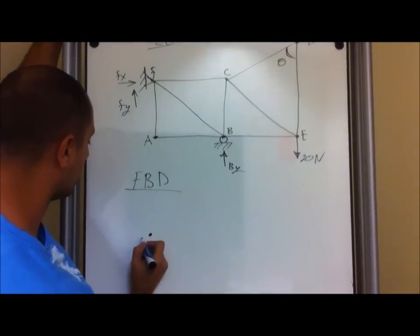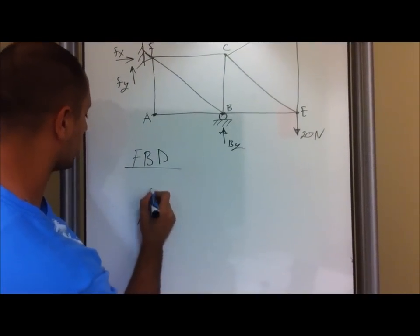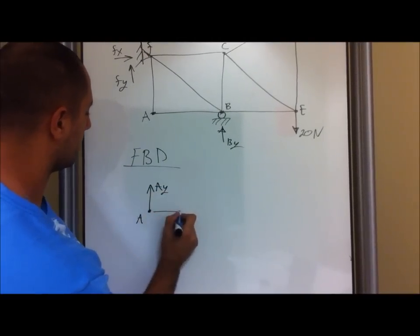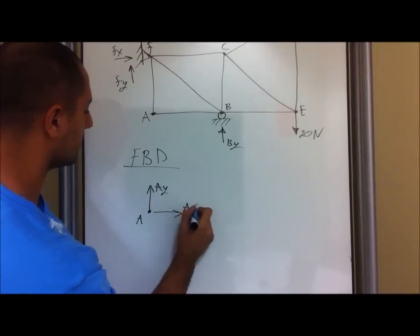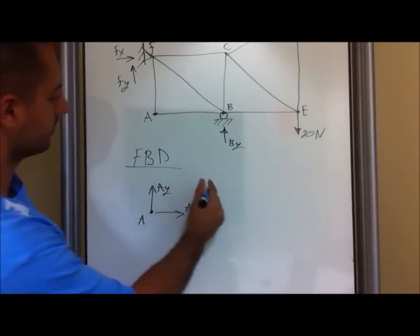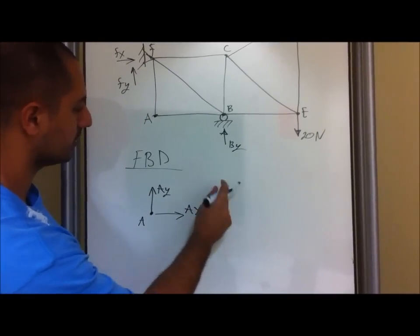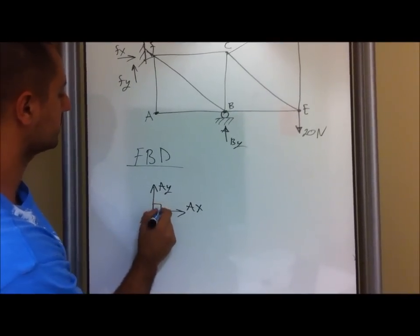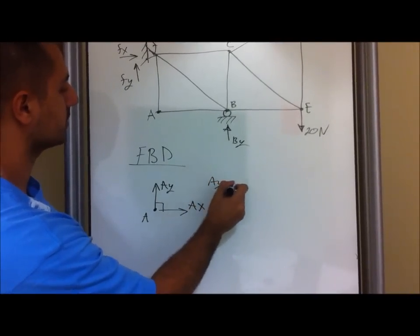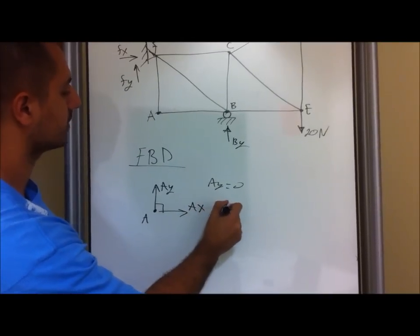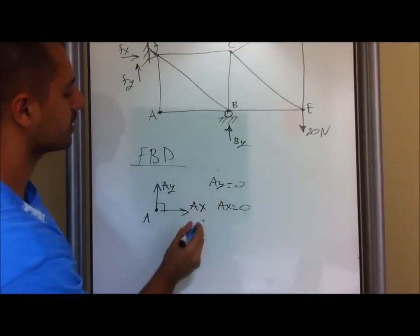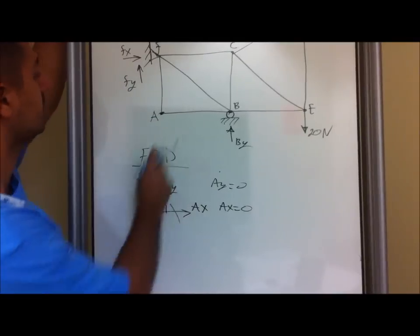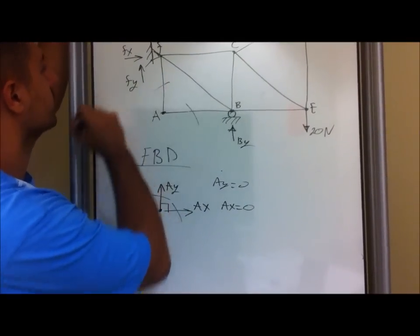This is our point A. We have a force in this direction, we're going to call it Ay, and another internal force, and I'm going to call it Ax. Do the summations in the y and x directions. You'll notice that these are 90 degrees, so Ay equals zero, and then Ax equals zero — this is in the y direction and this is in the x direction. So you automatically know that those two are zero force members.